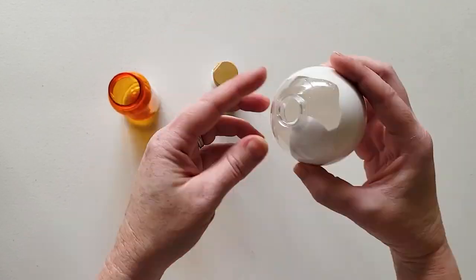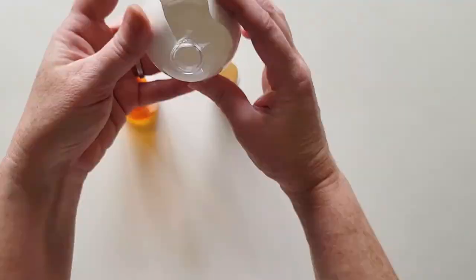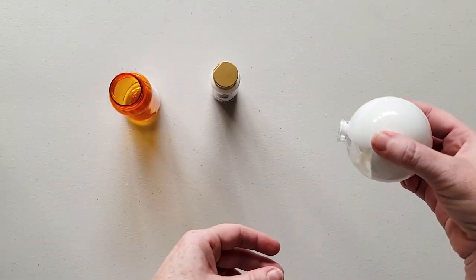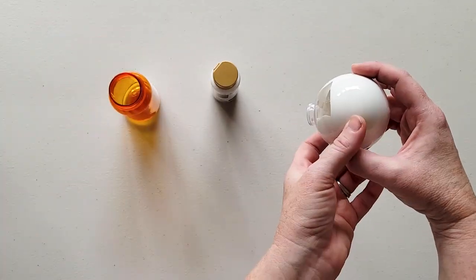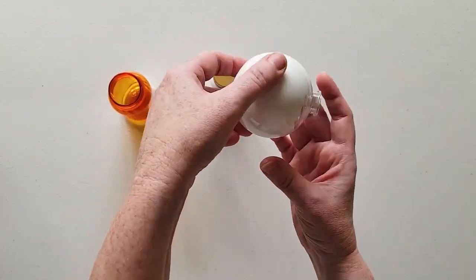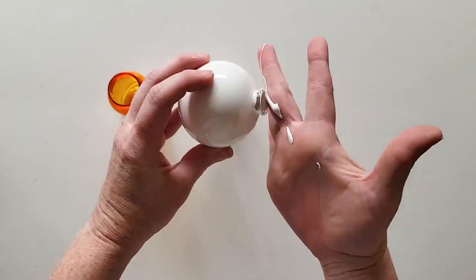You can lightly tap the sides of the ornament to get that paint to move around if you feel like it's kind of stopped moving. But try to avoid adding more paint because once the entire inside is coated,